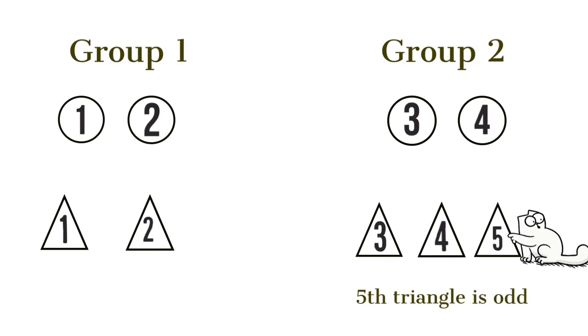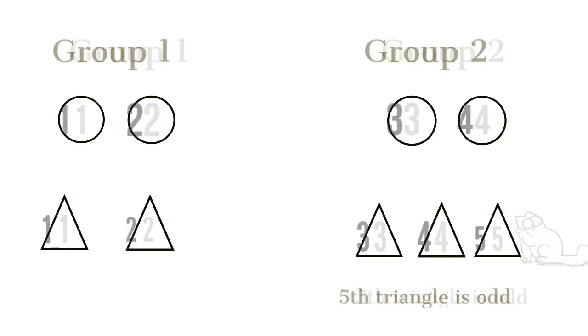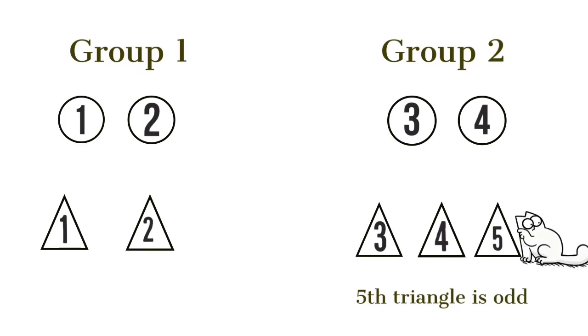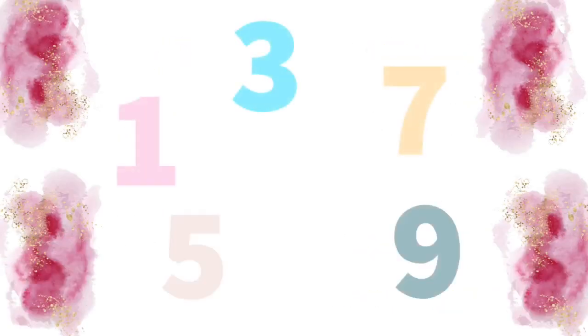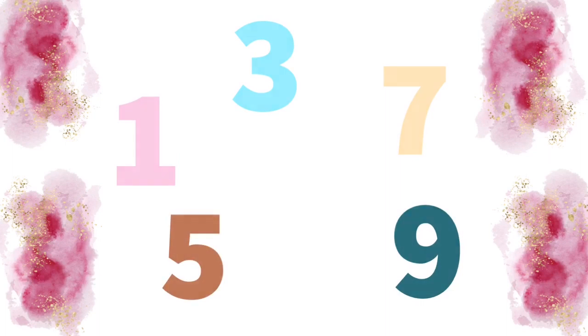Look, group one is equal. Group two is not equal because five is odd. Because of the five, these groups are not equal. So, one, three, five, seven, nine are odd numbers.